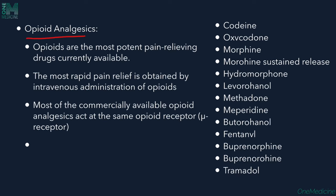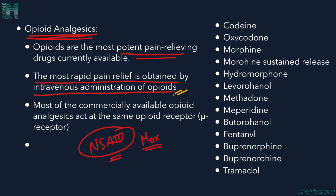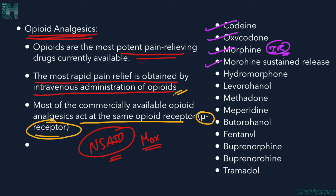The next level is opioid analgesics — the most potent pain-relieving drugs. When a patient is not tolerating pain even after maximum dose NSAIDs, that is when opioids are chosen. The most rapid pain relief is obtained by IV administration. Most commercially available opioid analgesics act at the mu opioid receptor. Important opioids include codeine, oxycodone, morphine (immediate and sustained release), hydromorphone, methadone, meperidine, fentanyl, buprenorphine, and tramadol.